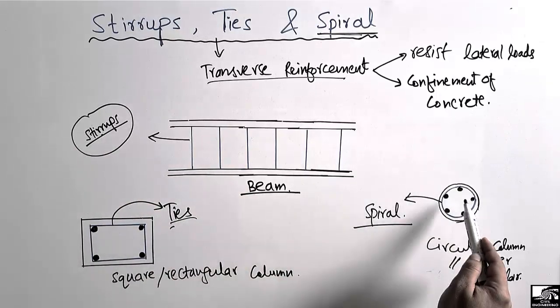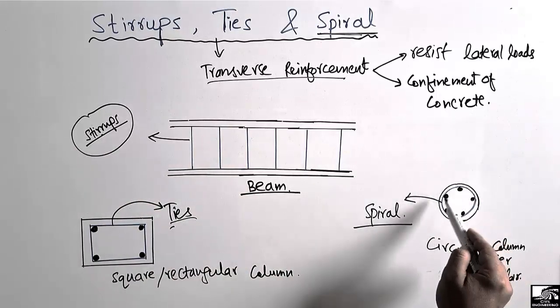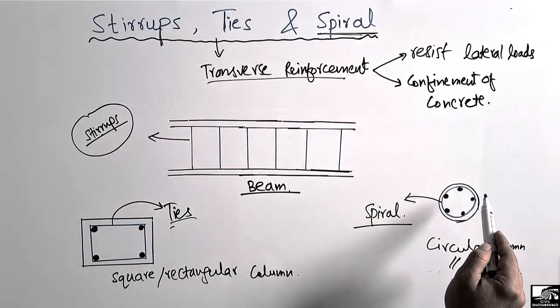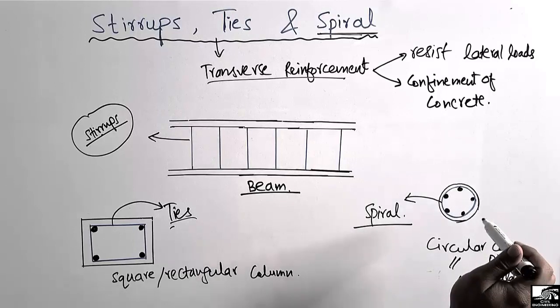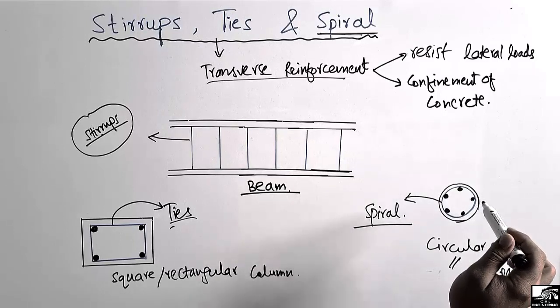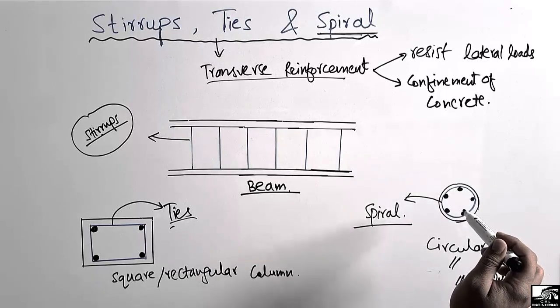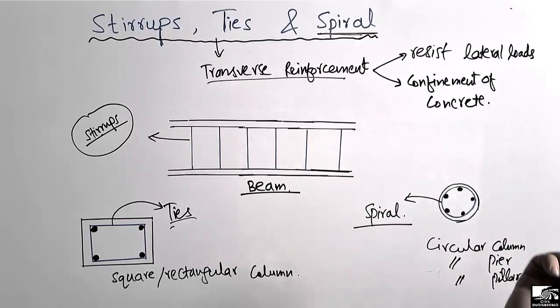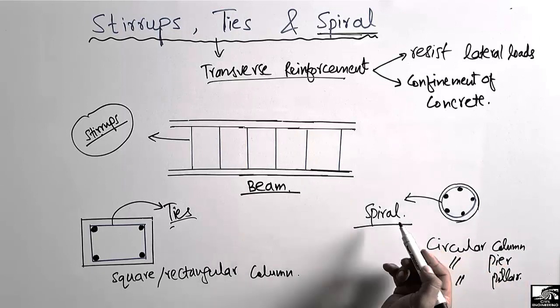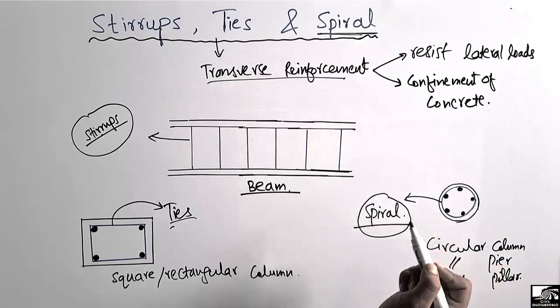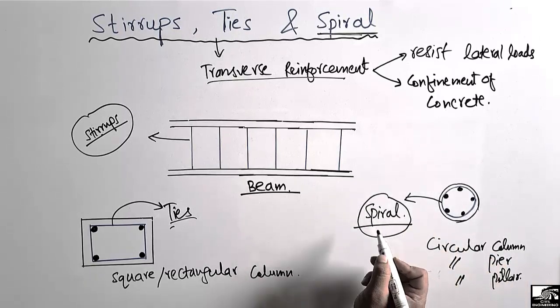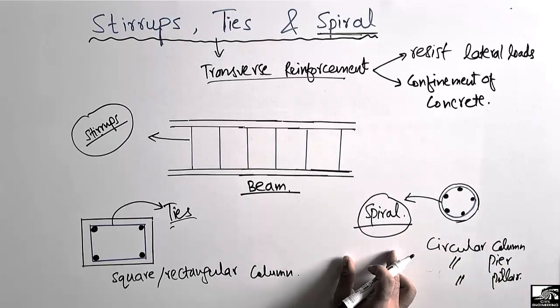When transverse reinforcement is used in a circular column or circular beam, the circular-shaped transverse reinforcement is known as the spiral.